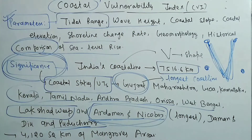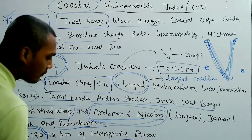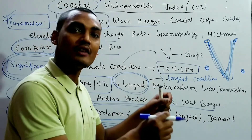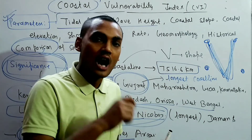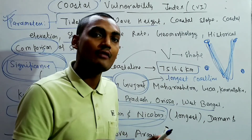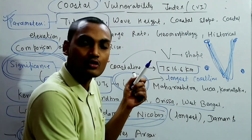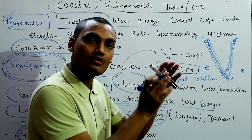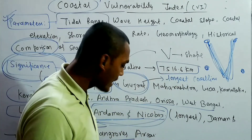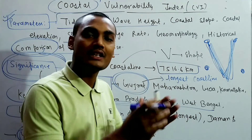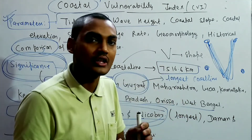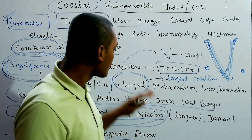India's coastline also consists of around 4,120 square kilometers of mangrove area, which is very important. A recent event in West Bengal highlighted how the Coastal Vulnerability Index affects mangrove forests. The CVI is significant not only for saving millions of people but also for protecting mangrove forests and national parks and sanctuaries in these areas.